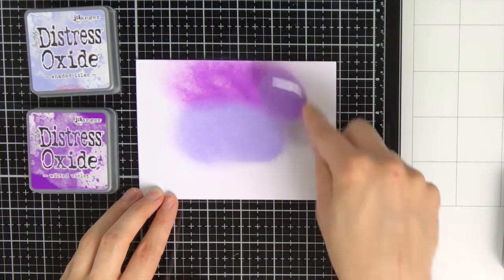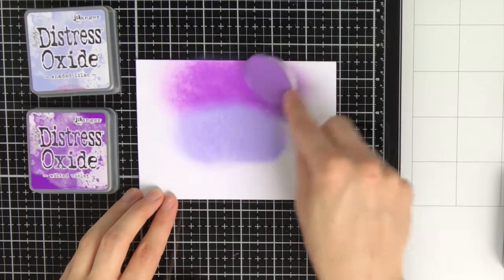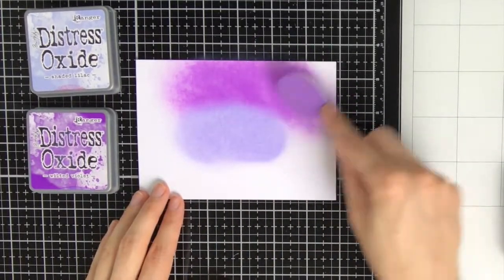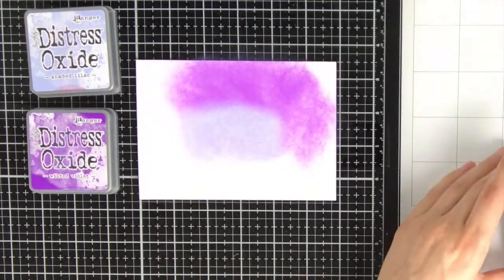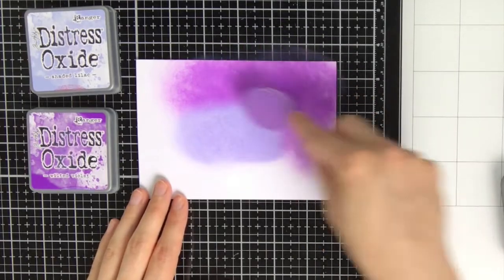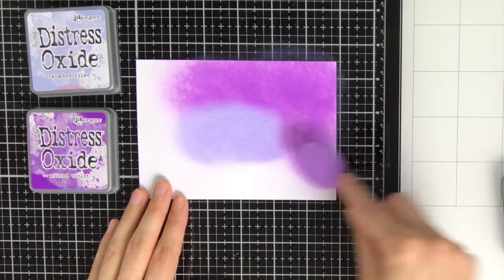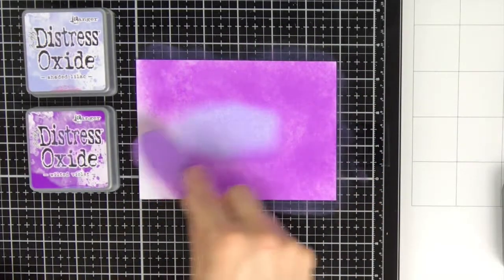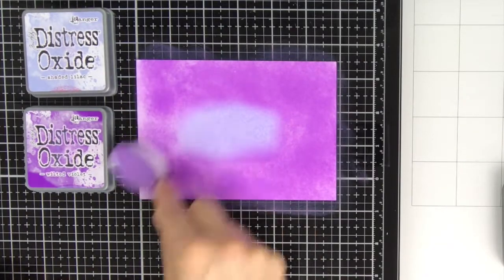For my background I wanted to go for a completely purple background with a little bit of a glow in the center. In the center I'm using Distress Oxide Ink Shaded Lilac, and all around it I am applying the Wilted Violet.